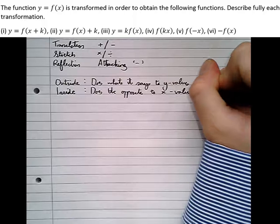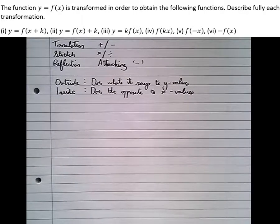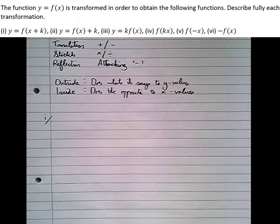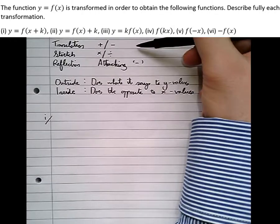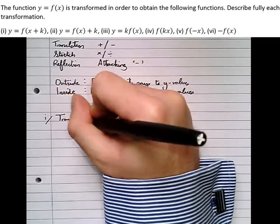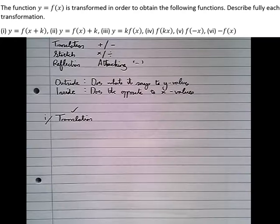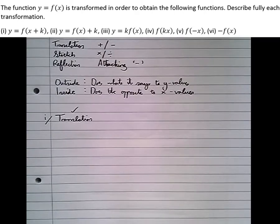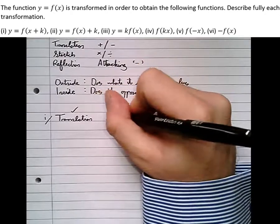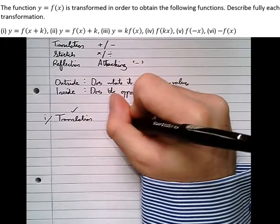In the context of this question, we'll see what that actually means. The question says the function y equals f(x) is transformed to obtain the following functions — describe fully each transformation. Part one: y equals f(x + k). We've added k, which makes it a translation — that word is worth one mark in the exam. This has been applied inside the bracket, so it does the opposite to the X values. Instead of adding k, we take k away from all the X values, and it does nothing to the Y values.